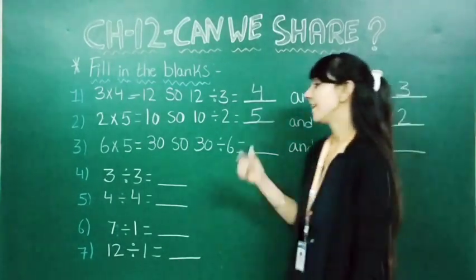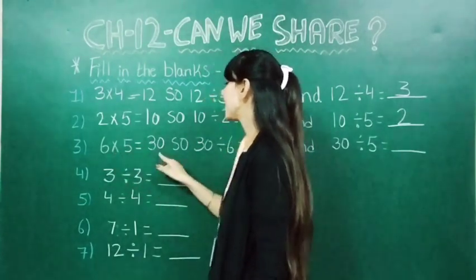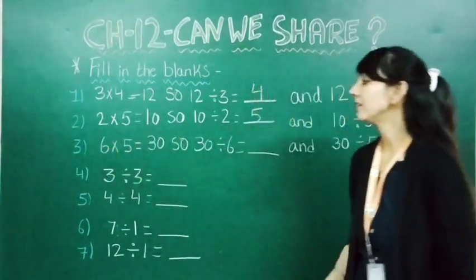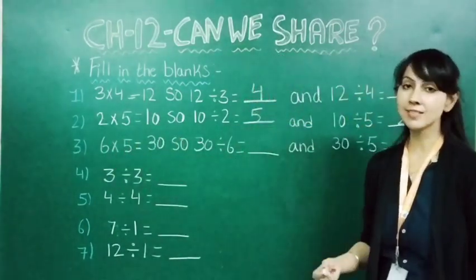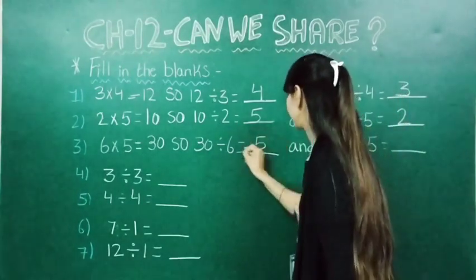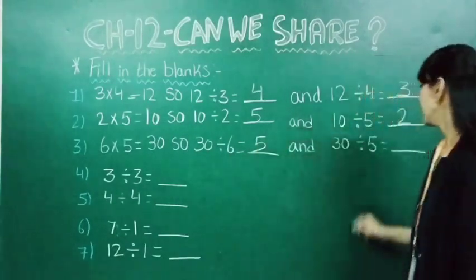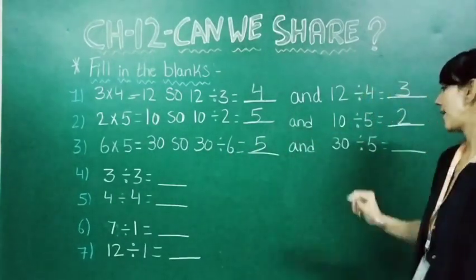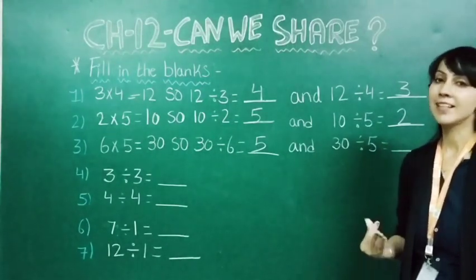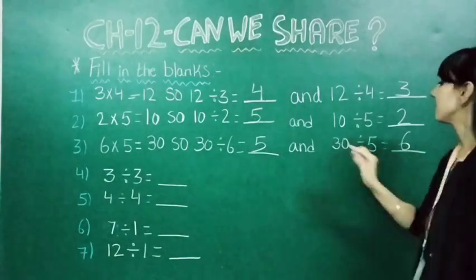Now let us see the next one. Six fives are thirty. Thirty divided by six — when thirty comes in the table of six? Six fives are thirty, so here it will come five. Now thirty divided by five — when thirty comes in the table of five? Six fives are thirty, so here it will come six.